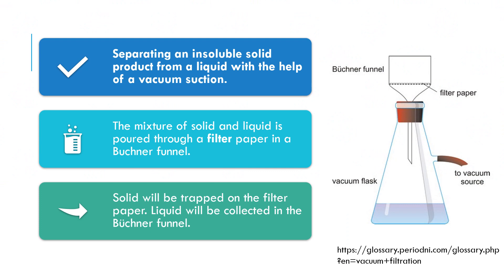Vacuum filtration is used to remove solid particles from a solid and liquid mixture efficiently using a vacuum pump. The solid residue will be collected on the filter paper and the filtrate will be collected in the vacuum flask.